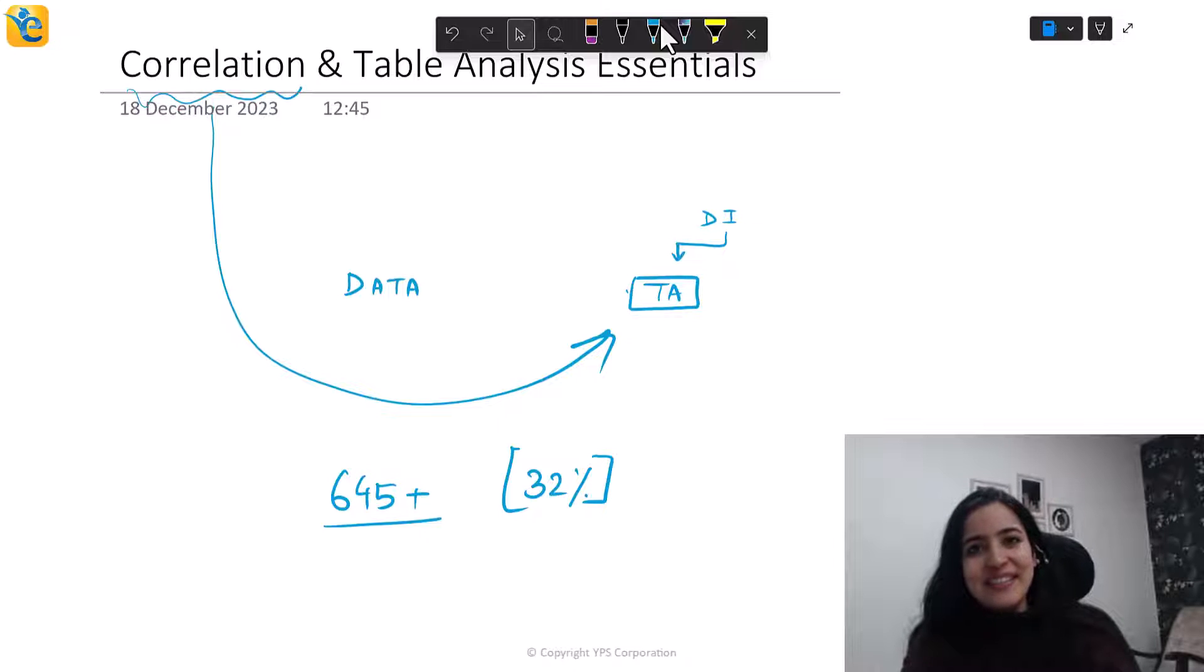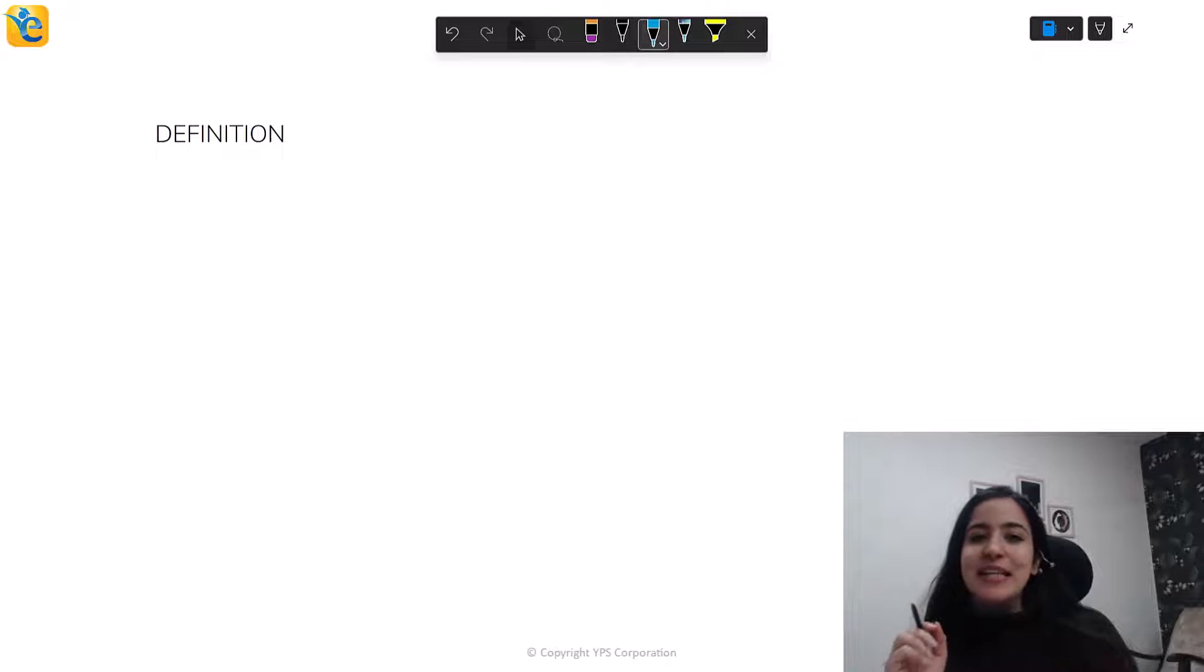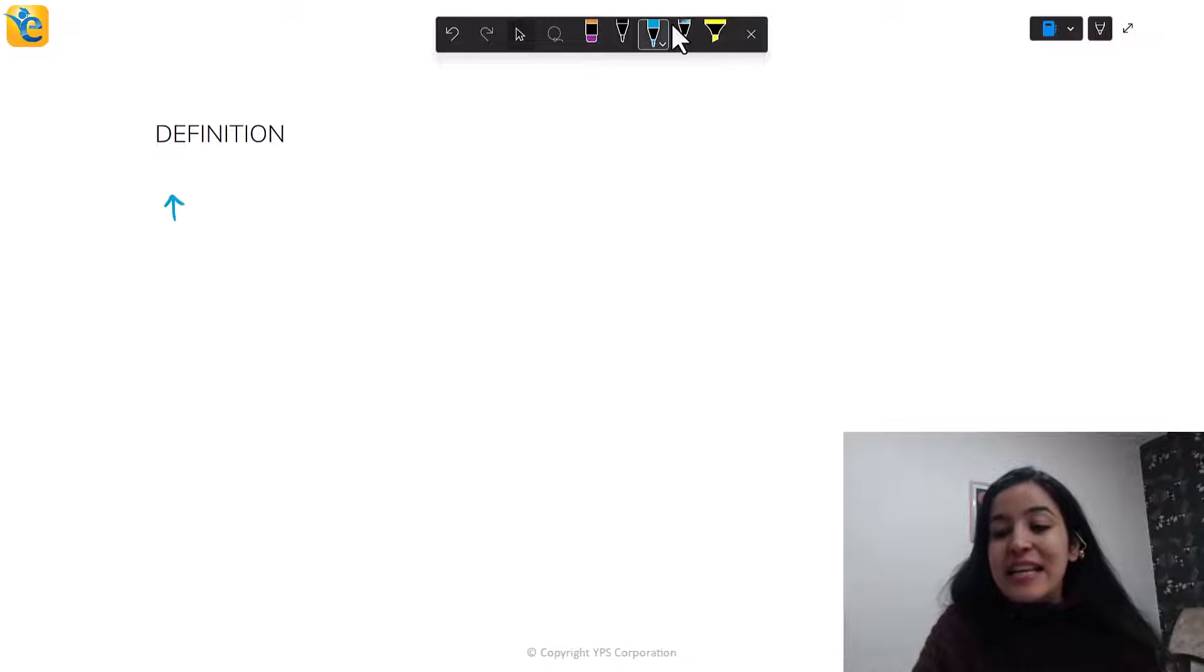But before we get there, let's have a recap of correlation. What is the simple definition? It's just that correlation is a statistical measure that describes how two variables change with respect to each other. If one variable is increasing, is the other one also increasing correspondingly, or is the other one decreasing correspondingly? Similarly, if one variable is decreasing, is the other one also decreasing, or is the other one increasing? This connection between two variables.